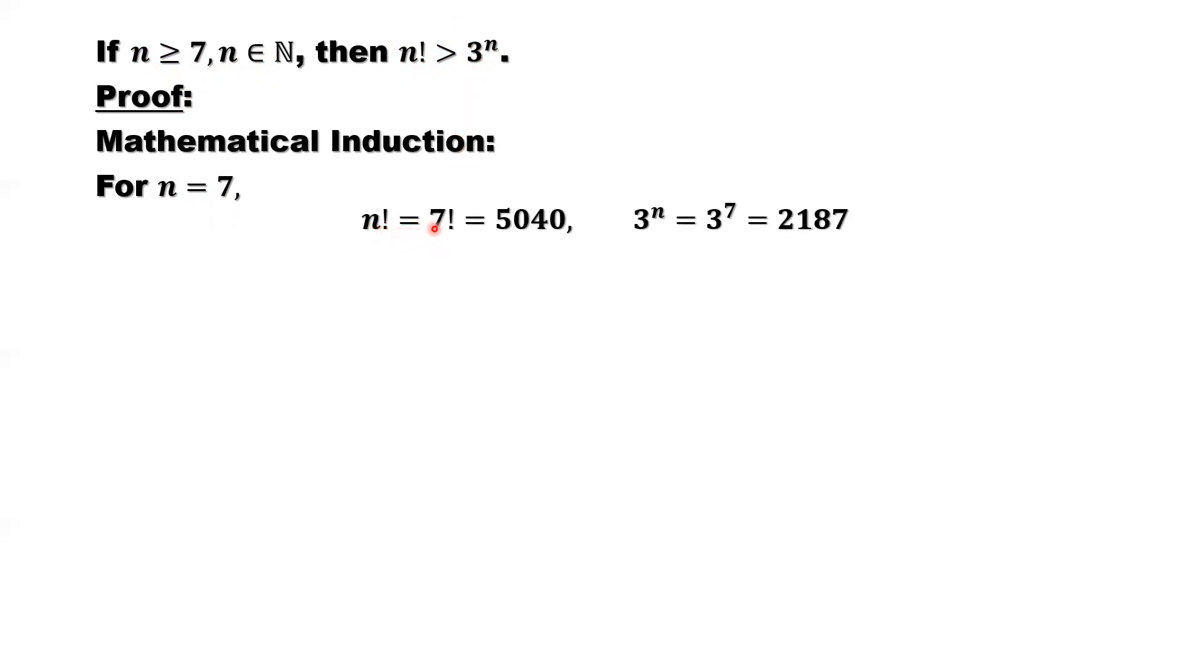n factorial equals 7 factorial. Here n equals 7 equals 5040. 3 to the power n equals 3 to the power 7 equals 2187.